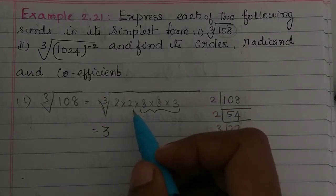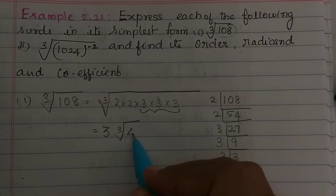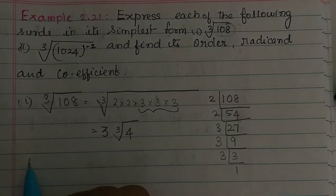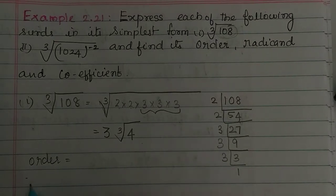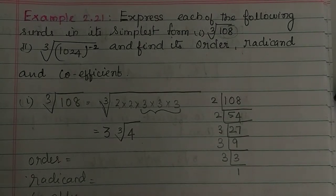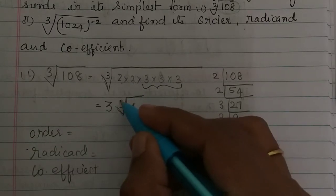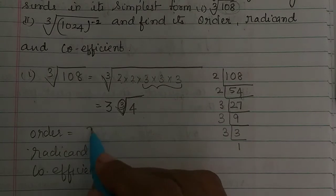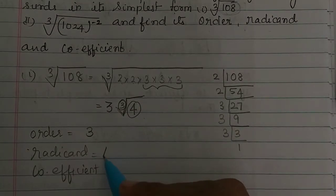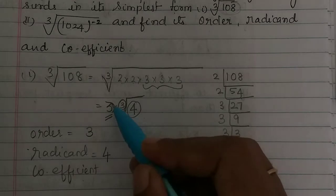The remaining numbers stay inside the root. So the cube root of 108 simplifies to 3 times the cube root of 4, where 2 × 2 = 4 remains inside. The coefficient here is 3. That is the simplest form.